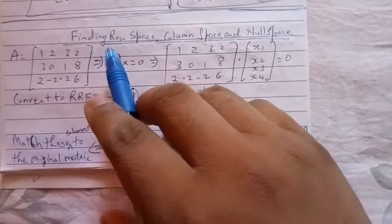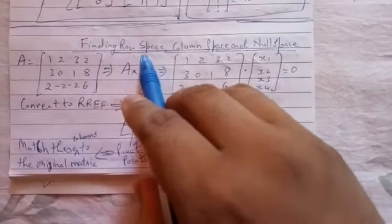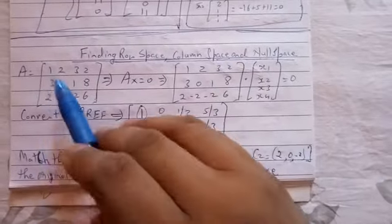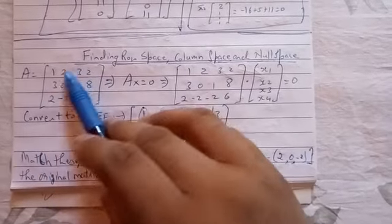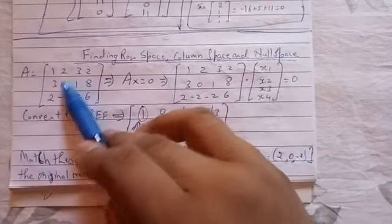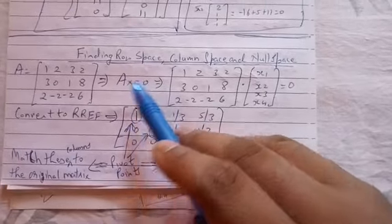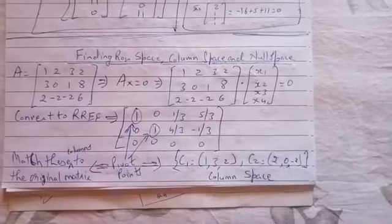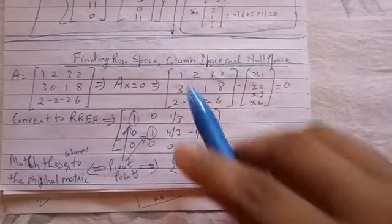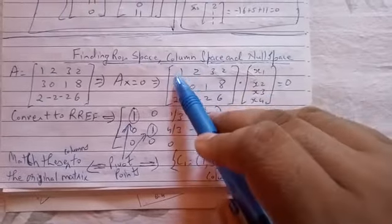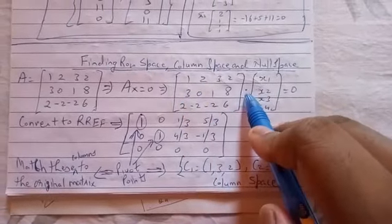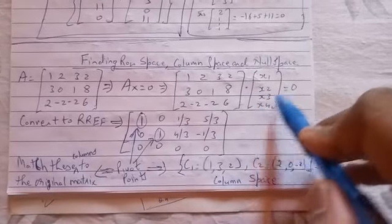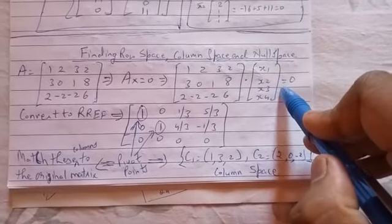In this video, I am going to explain how to find the row space, the column space, and the null space. So we are given a matrix A which is having these components. And we are going to perform AX equal to 0. For AX equal to 0, we write the matrix A multiplied with X1, X2, X3, X4, and that will be equal to 0.